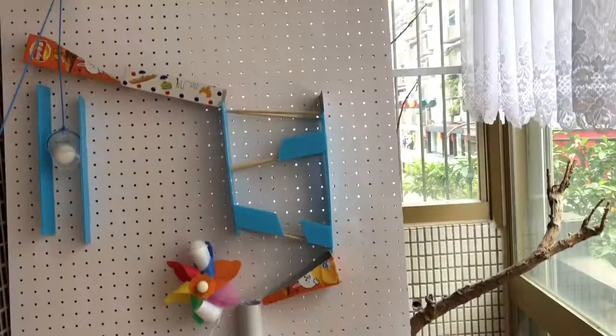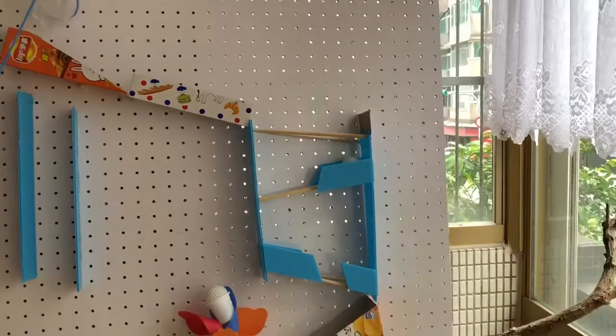A Rube Goldberg machine starts with a toy train pulling ball one and a pudding cup upwards. It reaches the incline planes and rolls down. It goes into a tube, triggers ball two, and falls into the cup.